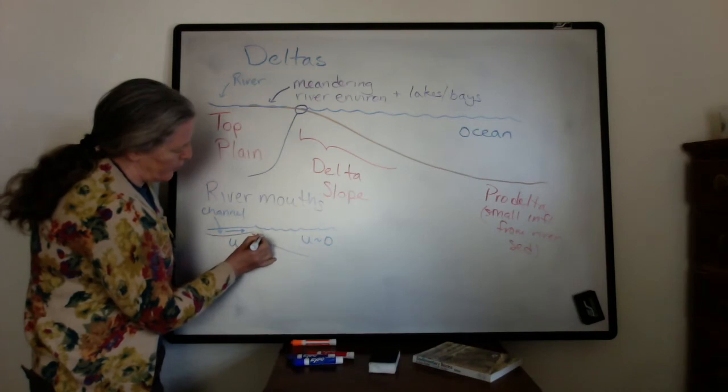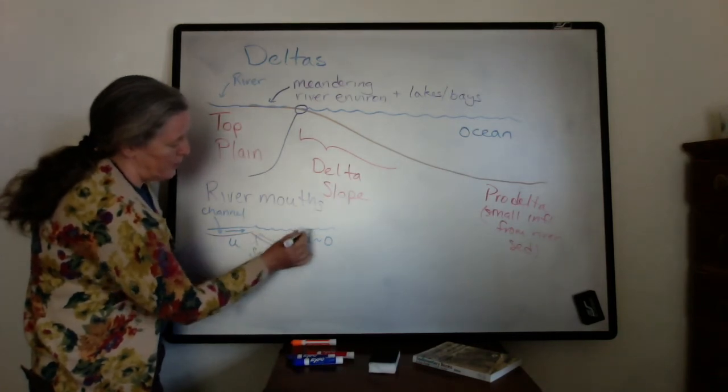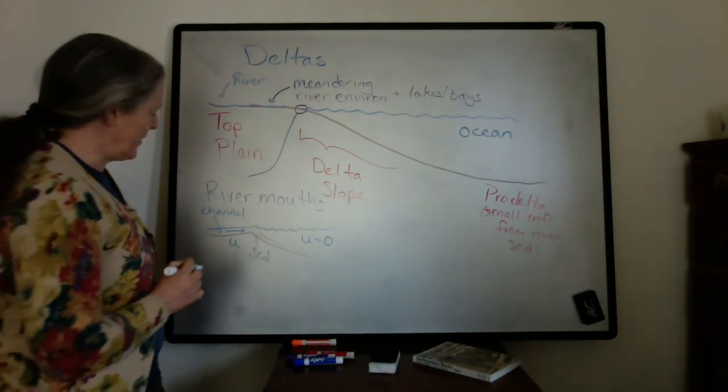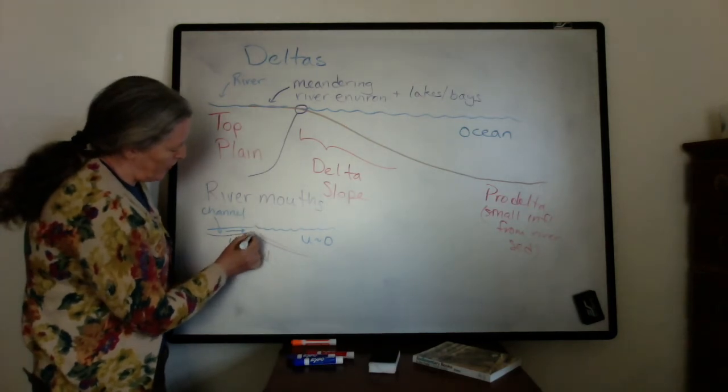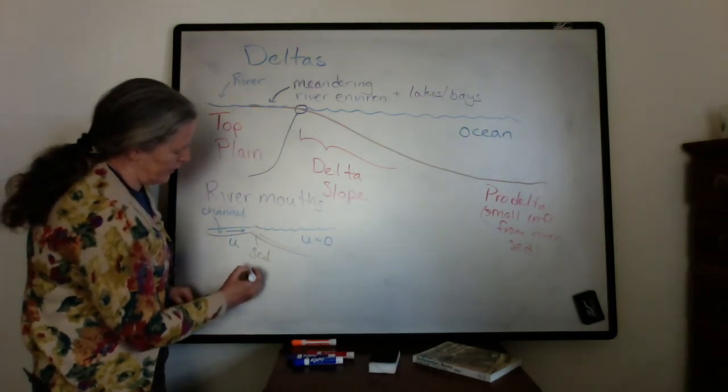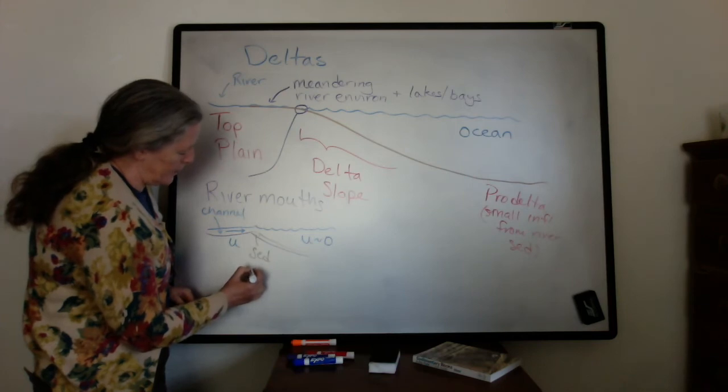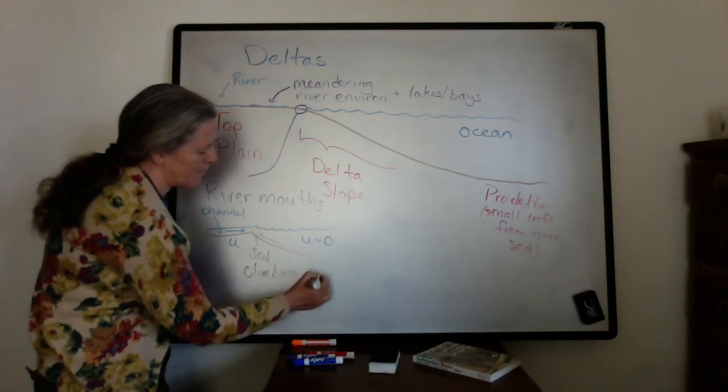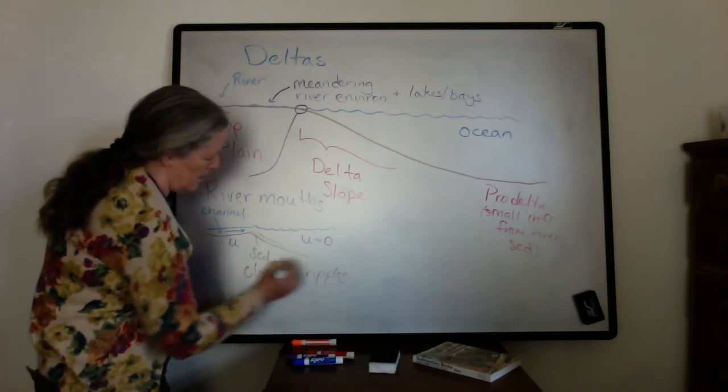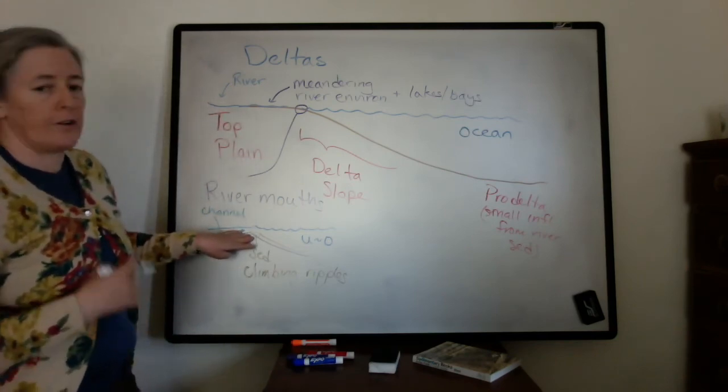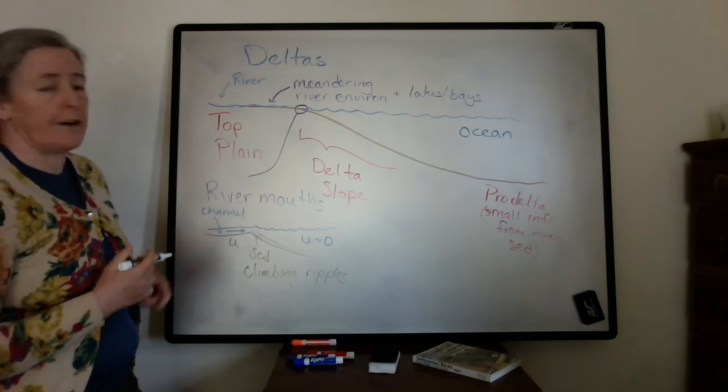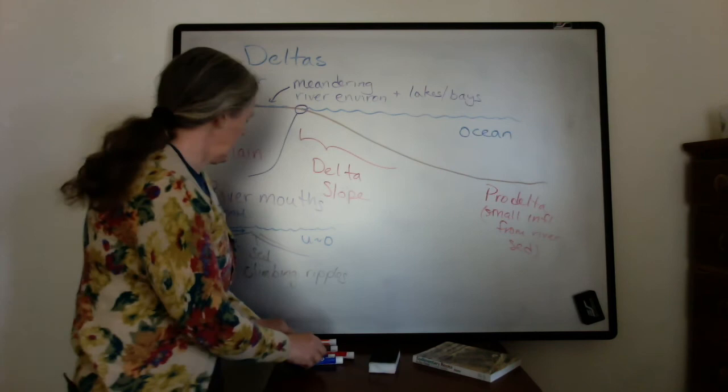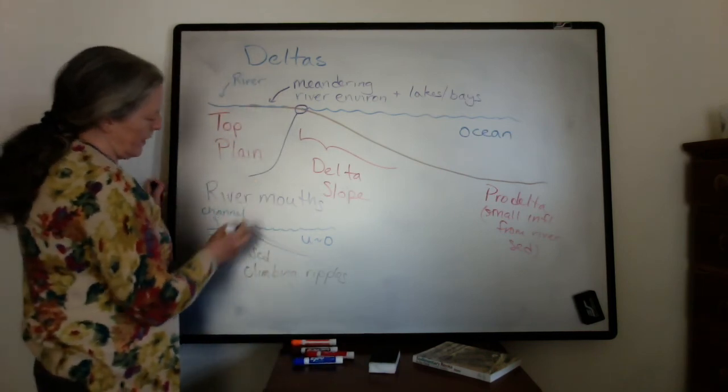Then it gets transported down the slope by waves or tides or turbidites, depending on the detail of what happens. But often right at the river mouth, you have very high deposition rates and often things like climbing ripples and other sedimentary structures that really show very rapid sediment accumulation.